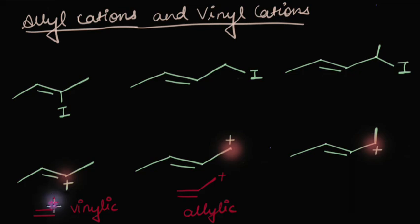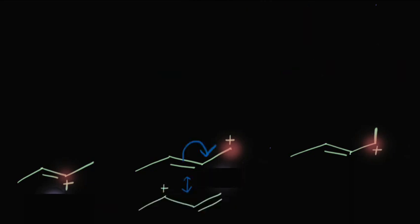Digging a little deeper: in the vinylic cation, there's a positive charge on a carbon atom that already forms a double bond, so there's no possibility of resonance. But if the positive charge is alternate to a pi bond, there is a possibility of resonance. Drawing the resonating structures for the second and third carbocations, we can see how the positive charge spreads over all the atoms and becomes stabilized.